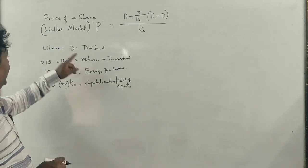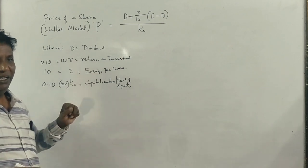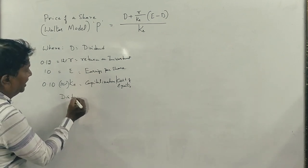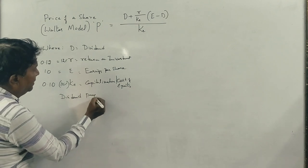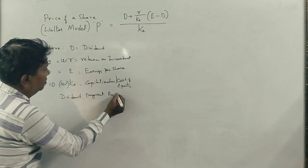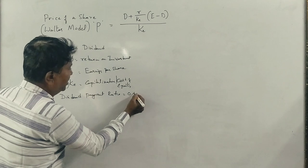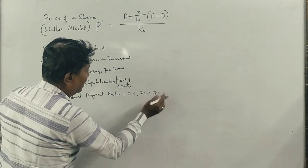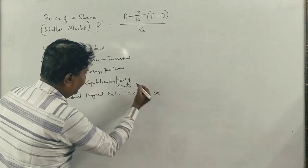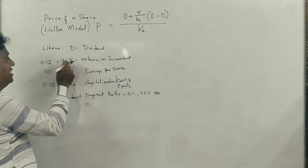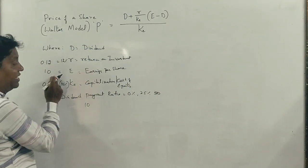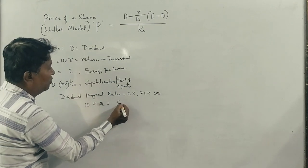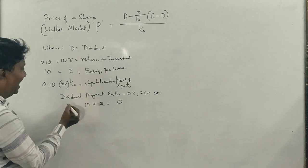Everything is clear. Now, what is the dividend payout ratio? The payout ratios are 0%, 25%, and 50%. If earnings are 10 rupees and the dividend payout ratio is 0%, the dividend D is 0. If payout is 25%, dividend D is 2.50 rupees.